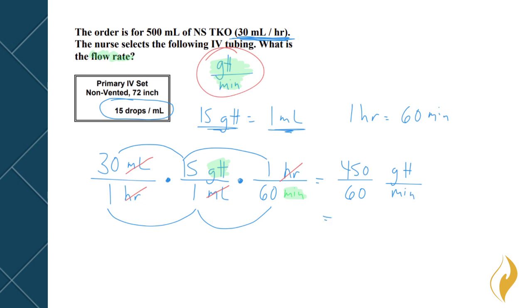And remember that this is going to be now drops per minute. And we want to go ahead and do this division. 450 divided by 60 comes out to be 7.5 drops per minute.